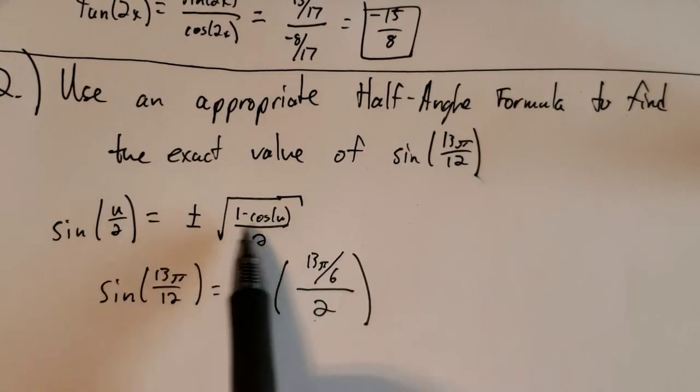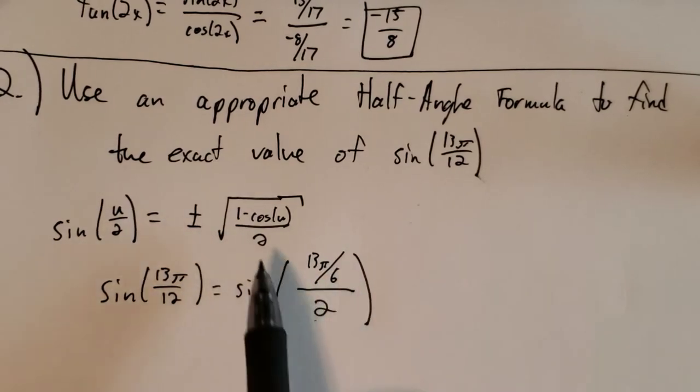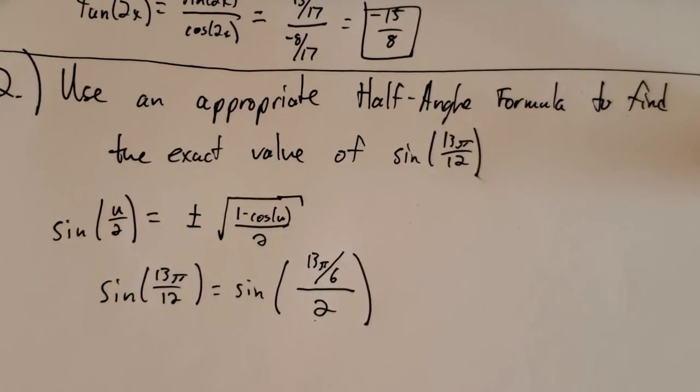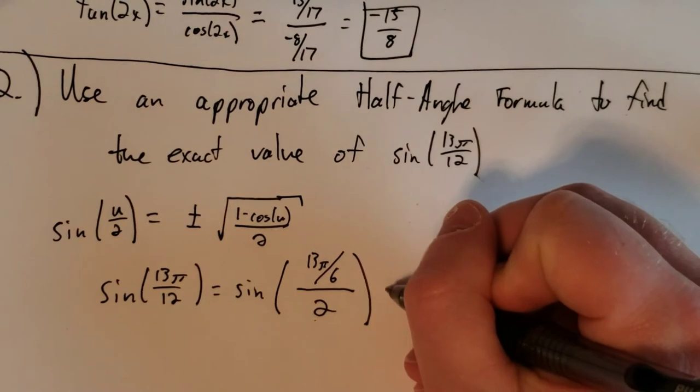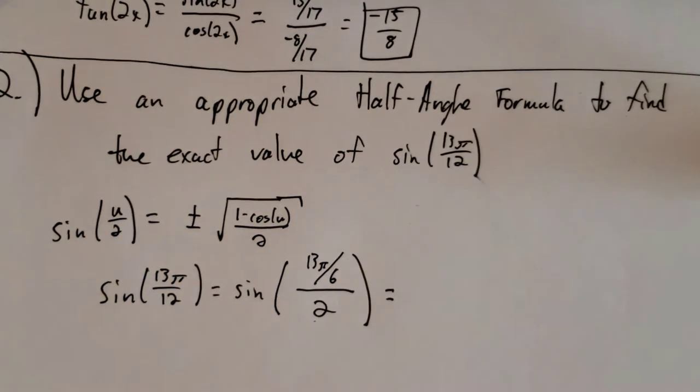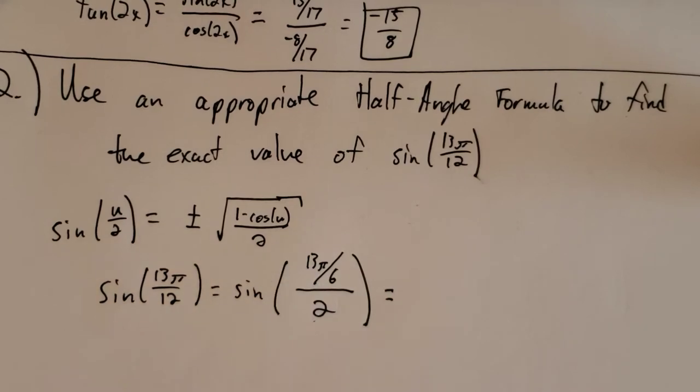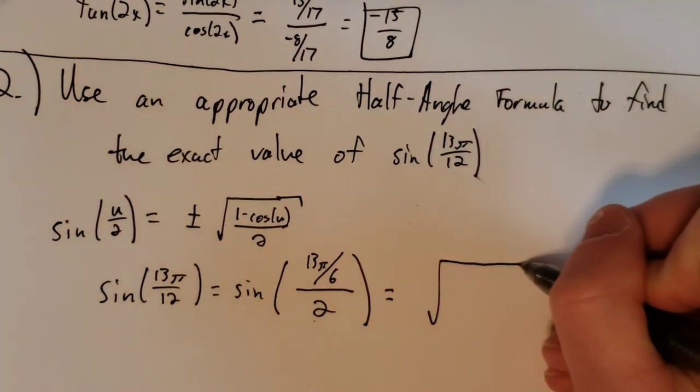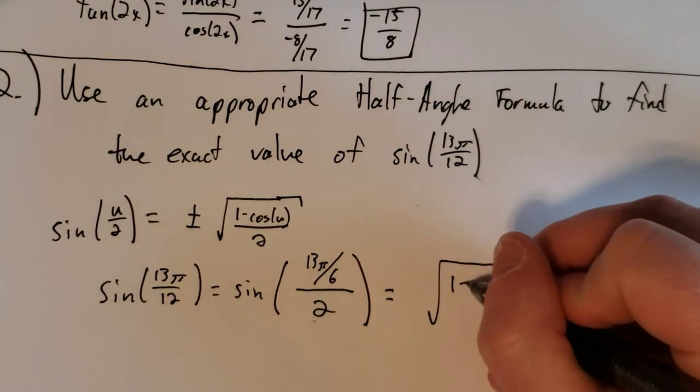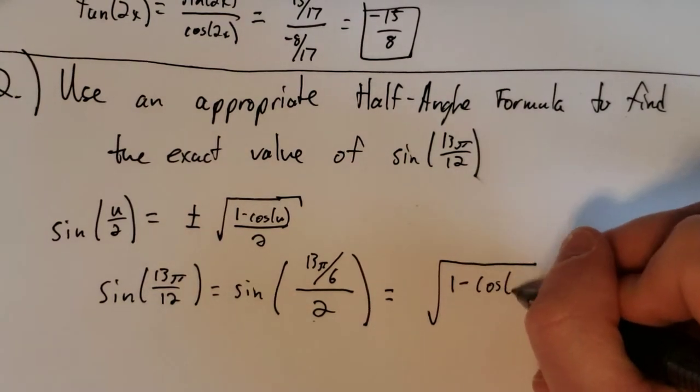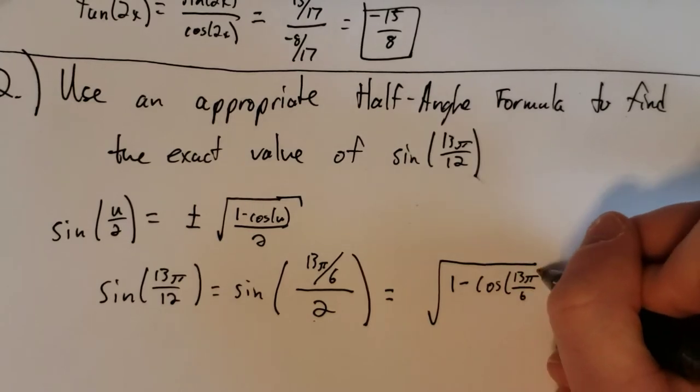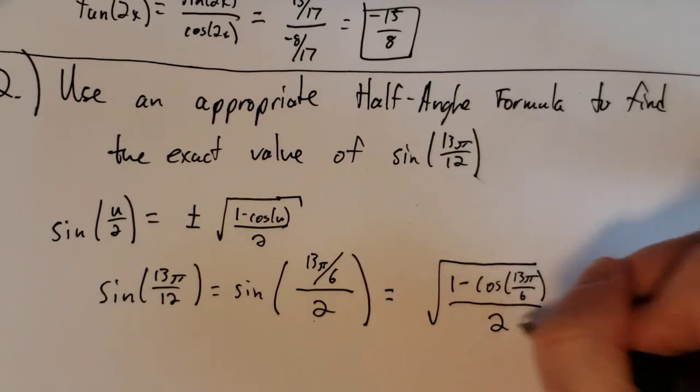So in this formula up here, 13 pi over 6 is the u value. Except, 13 pi over 6 is the same as—well, actually, we'll do that in a minute. So let's just rewrite this. So if 13 pi over 6 is u, this is the square root of 1 minus cosine of 13 pi over 6 all over 2.